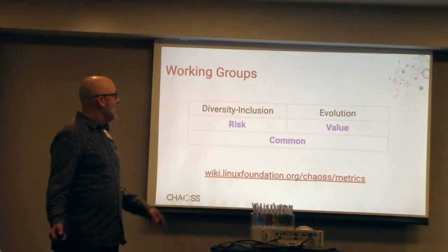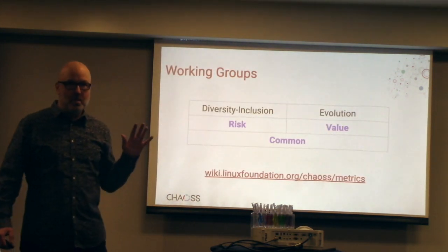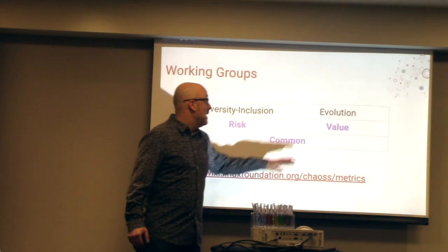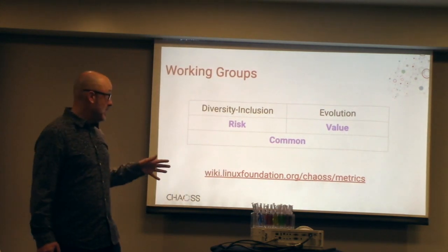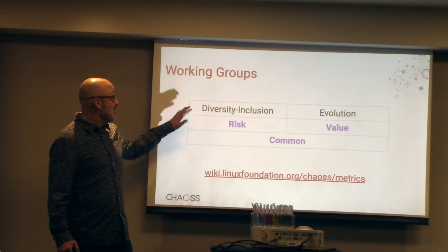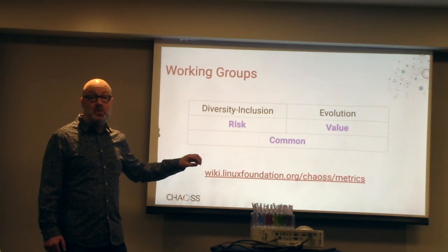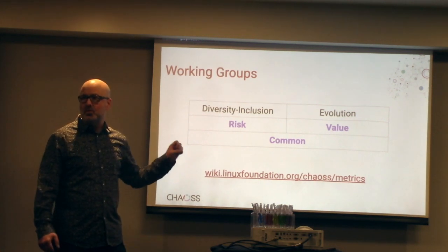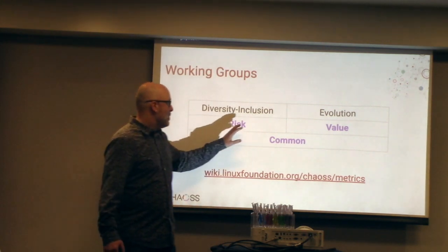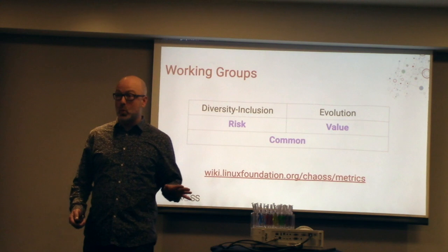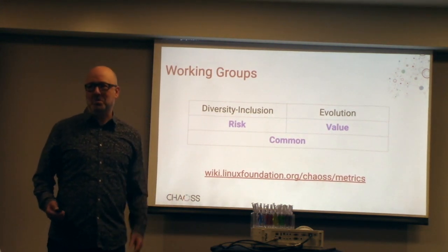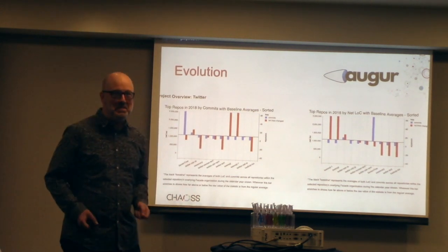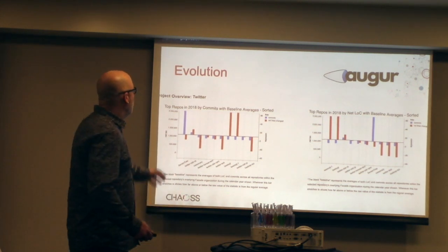These are some of the organizations that are part of this open community working on CHAOSS. We have two things: metrics categories and software. The metrics fall into five working groups. We used to call one of them 'growth maturity and decline' but now we call it 'evolution.' There's also a working group on diversity and inclusion, which has been less focused on defining metrics and more focused on framing out the challenge of diversity in open source software.